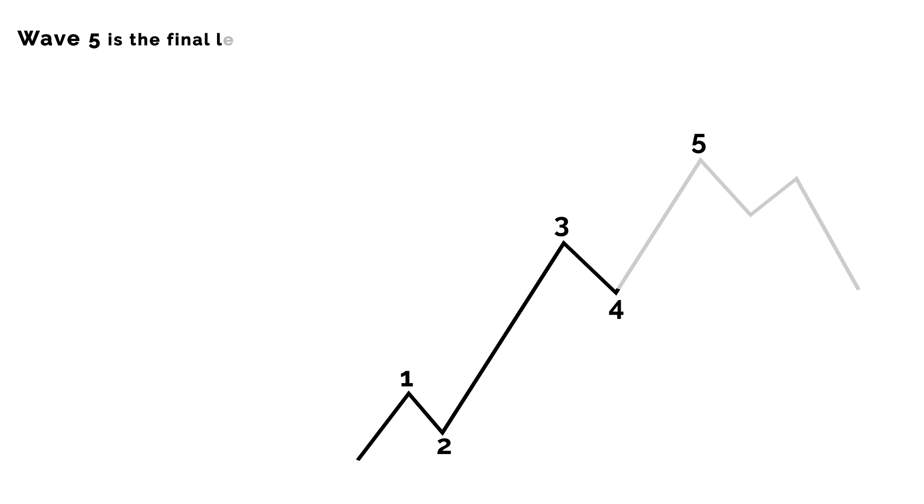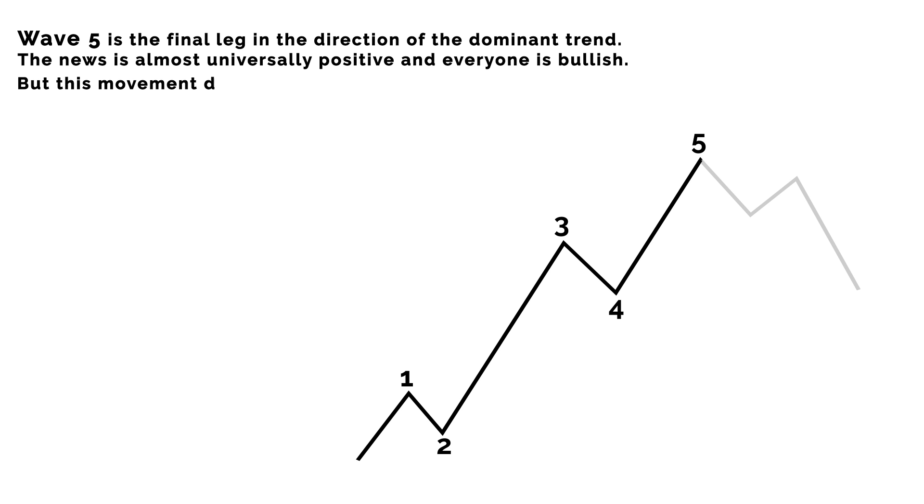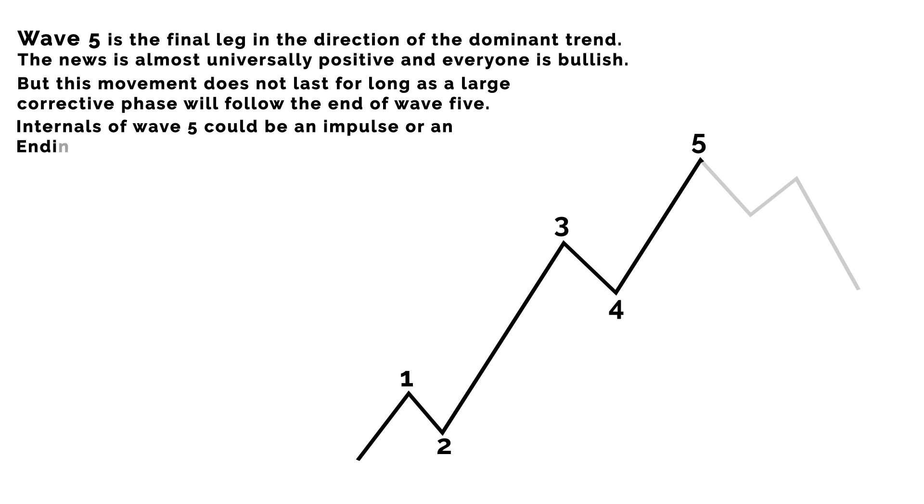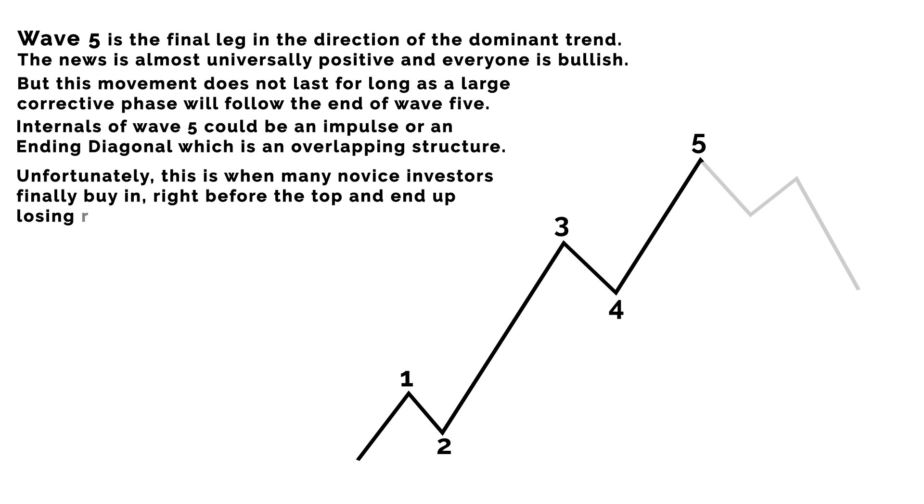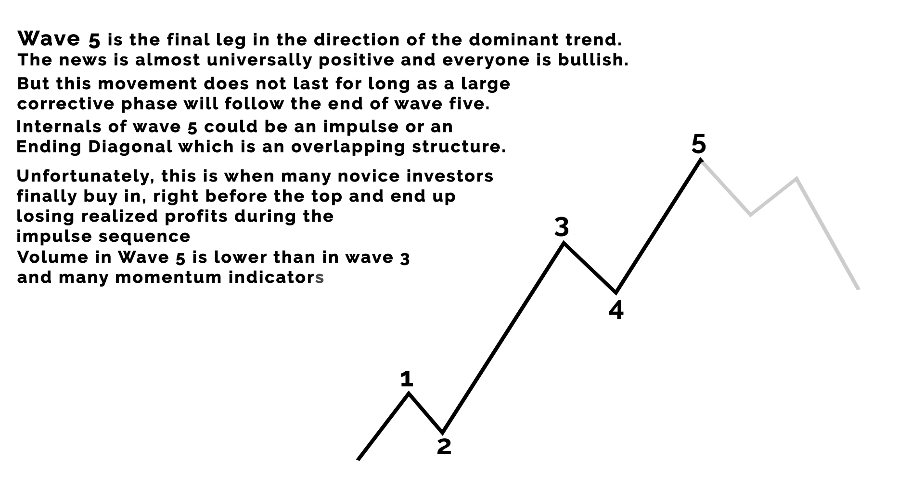Number 5, Wave 5. Wave 5 is the final leg in the direction of the dominant trend. The news is almost universally positive and everyone is bullish, but this movement does not last for long as a large corrective phase will follow. Internals of Wave 5 could be an impulse or an ending diagonal, which is an overlapping structure. Unfortunately, this is when many novice investors finally buy in, right before the top, and end up losing realized profits during the impulse sequence. Volume in Wave 5 is lower than in Wave 3, and many momentum indicators start to show divergences. We look for divergence in Relative Strength Index (RSI) in Wave 5.